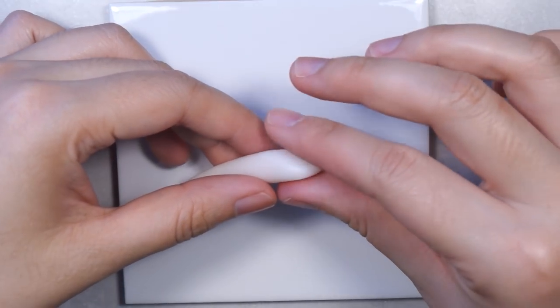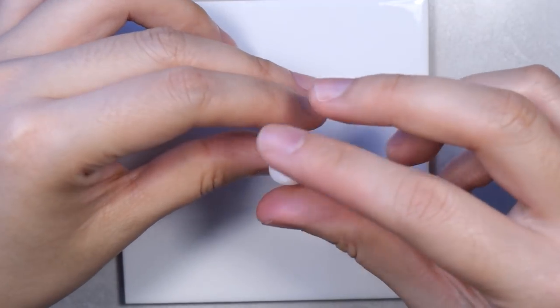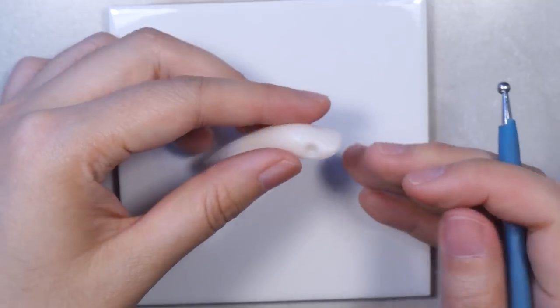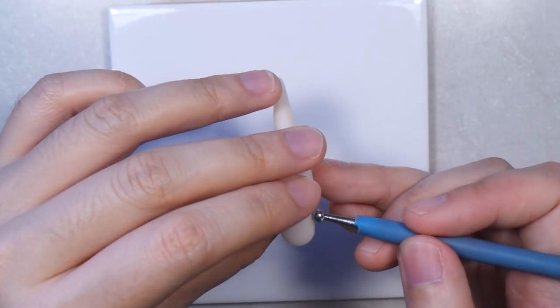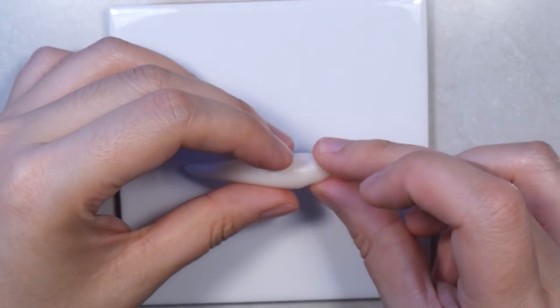To start, roll a translucent clay into a ball and then make it into a teardrop shape. Now you can shape the head in whatever shape you want if you also decide to make this into a fantasy fish or make a pokemon instead since pokemon go is so popular nowadays.